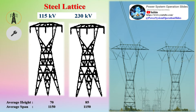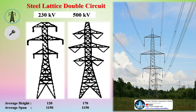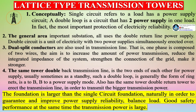A lattice tower is a framework construction made of steel or aluminum sections, and is the most common type for high-voltage transmission lines. Aluminum is used for reducing weight, such as in mountainous areas where structures are placed by helicopter, with the extra material cost offset by lower installation cost. Lattice steel towers are generally made of angle-profiled steel beams (L or T-beams), and trusses are often used for very tall towers.